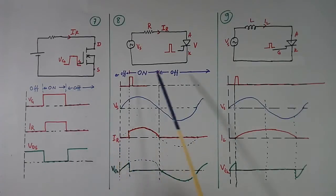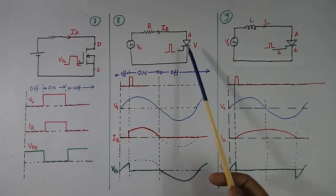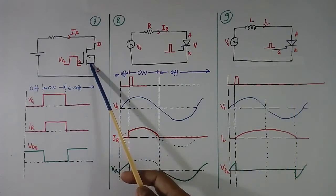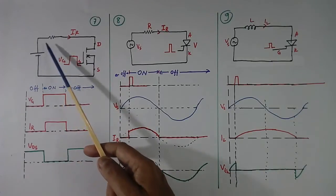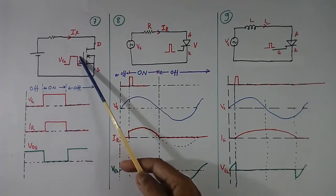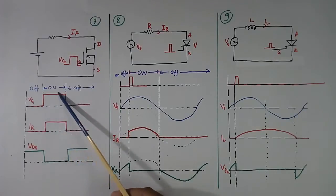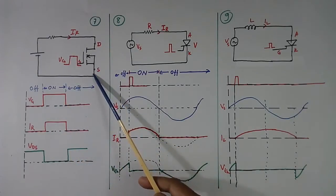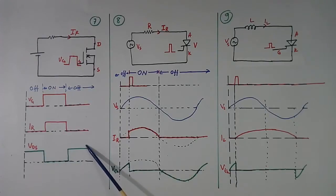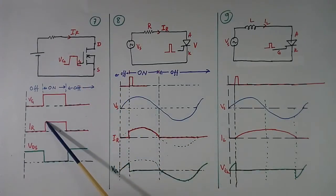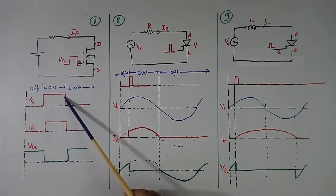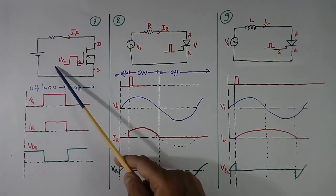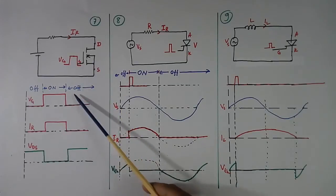Now here we will see the ON/OFF function of MOSFET and thyristor. In MOSFET, we have connected one DC source and one resistor. When we give a gate pulse, this becomes ON, and when it is ON, current flows. This is OFF period, this is ON period — from here to here, till gate pulse is there. As soon as gate pulse is removed, this becomes OFF — so this is OFF period.